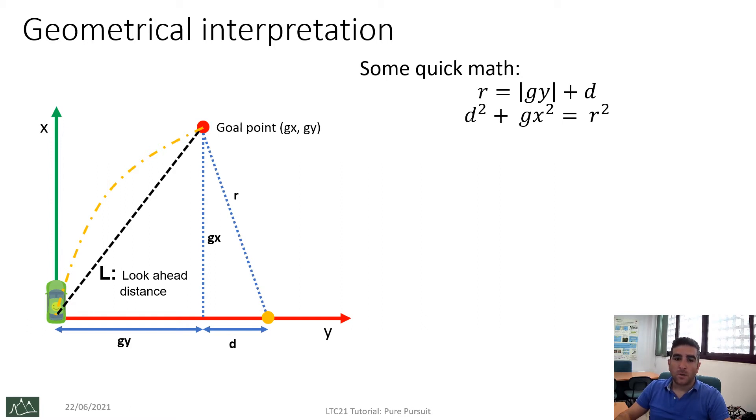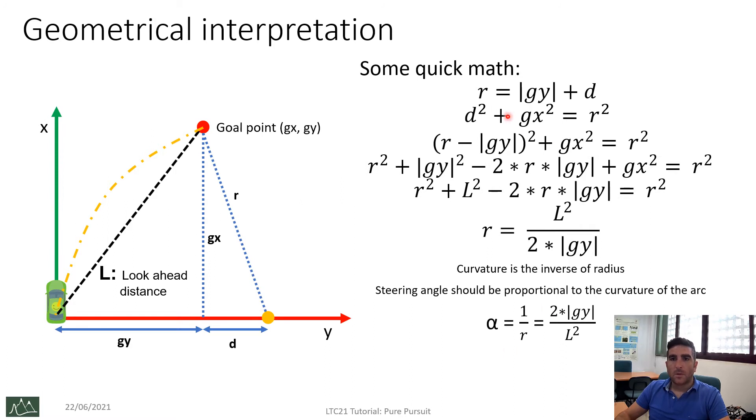These two equations are obvious. R is the absolute value of GY plus D, and D squared plus GX squared is equal to the radius squared. Then, just substitute out D as R minus absolute value of GY, and then solve the equation looking for the value of the radius. The curvature is the inverse of the radius, so the steering angle should be proportional to the curvature of the arc.